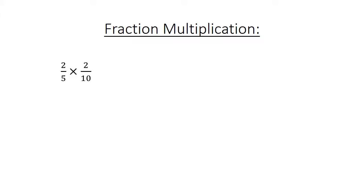Fraction multiplication: 2 over 5 times 2 over 10 equals 4 over 50. Simplify to get 2 over 25.